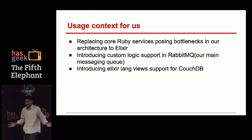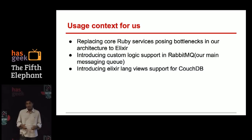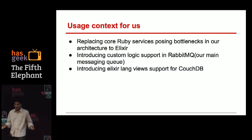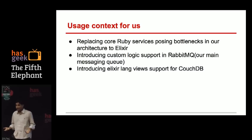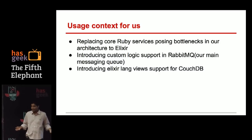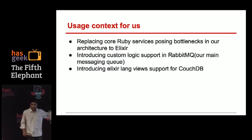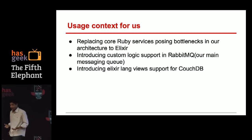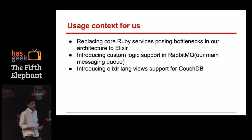We have lots of microservices at Housing, and these microservices have to communicate with each other. For communication, we could use HTTP, but that is not a scalable pattern. Asynchronous communication is best achieved by message queues, so we use RabbitMQ — which is itself built on the Erlang virtual machine. CouchDB is used for some use cases as well, and we'll talk about that.